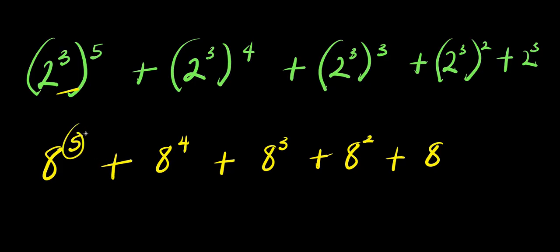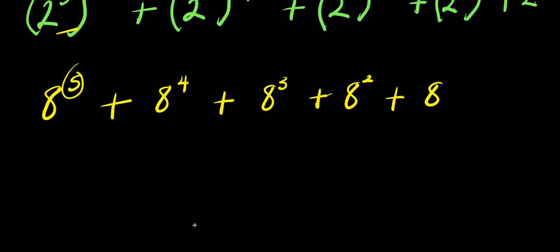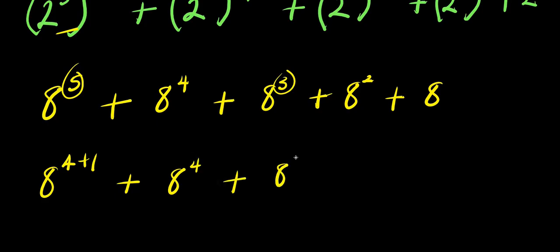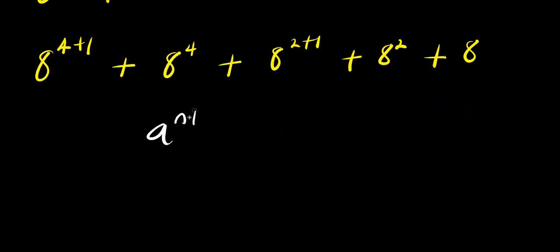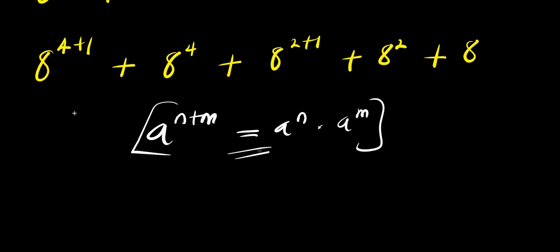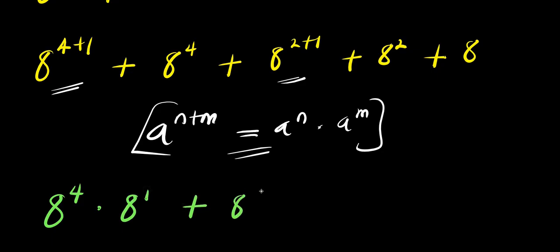The next step: I can express 8^5 as a sum — writing it as a^(4+1), and 8^3 as a^(2+1). Using the rule a^(n+m) = a^n times a^m, I apply this to get: a^4 times a^1, plus a^4, plus a^2 times a^1, plus a^2, plus 8.